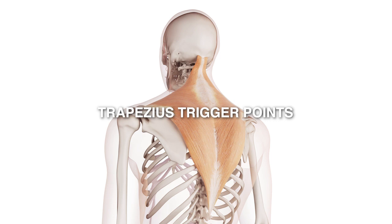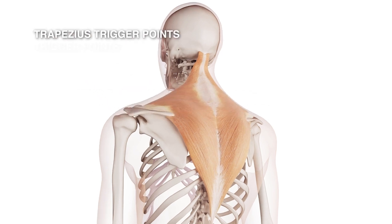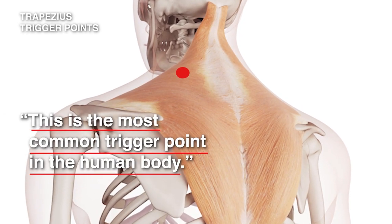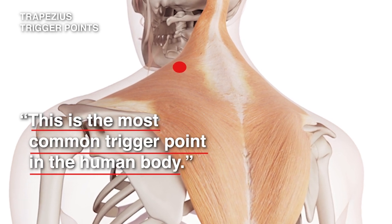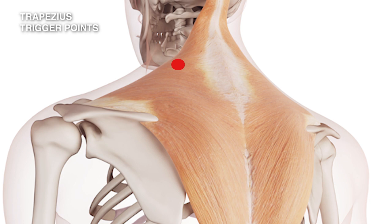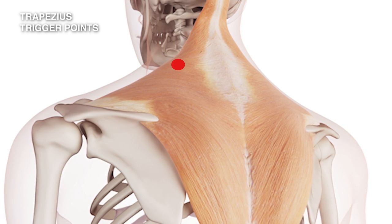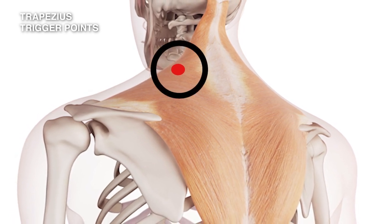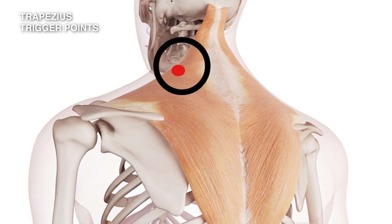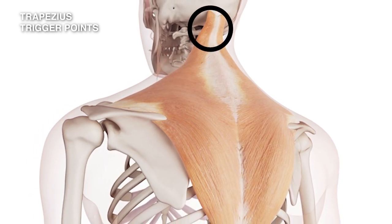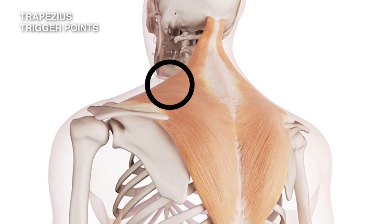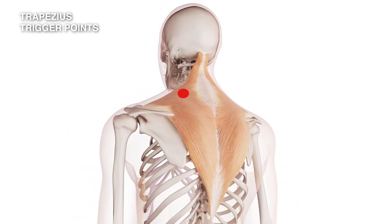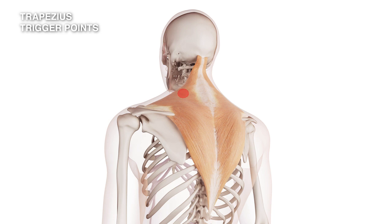There are two trigger points of great importance. The first one is trigger point number one — the most common trigger point in the human body, more common than any other. It occurs in the free edge of the trapezius muscle, where the lateral fibers turn around and become vertical in the angle of the neck and the shoulder.